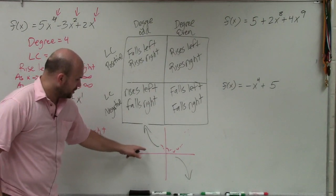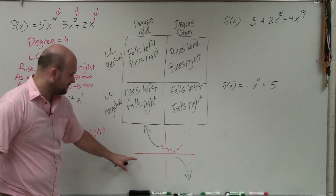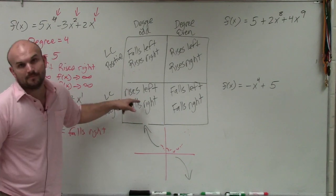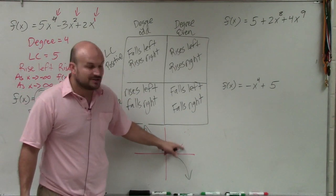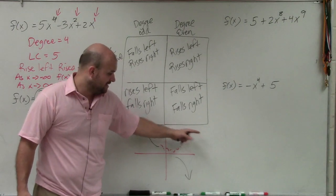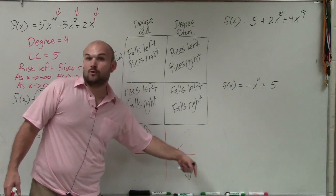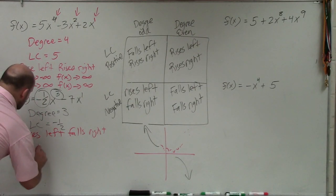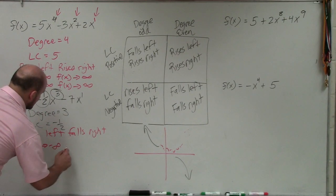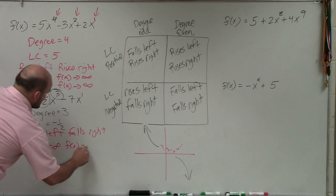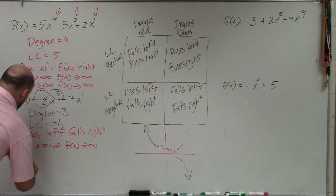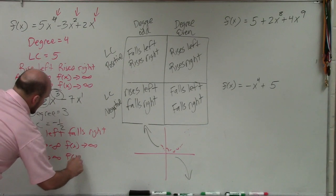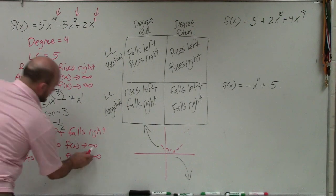Using interval notation: as my x values go towards negative infinity, my f of x values go up to infinity. As my x values go towards positive infinity, my f of x values go down towards negative infinity. So as x approaches negative infinity, f of x approaches infinity; and as x approaches positive infinity, f of x approaches negative infinity.